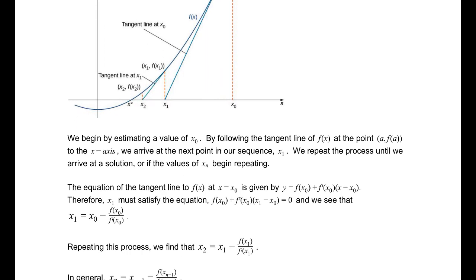So how this works: the equation of the tangent line at x equals x naught is given by this equation. Now x₁ must satisfy this equation, so we then evaluate for x₁ equals zero. Now if we solve that, we can find that x₁ equals x naught minus f of x naught divided by f prime of x naught.